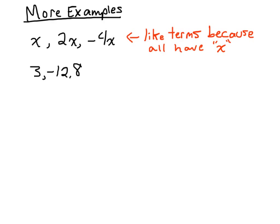In this next example, we see 3, negative 12, and 8. These are all constant terms, so they are like terms. They also have no variables attached to them.